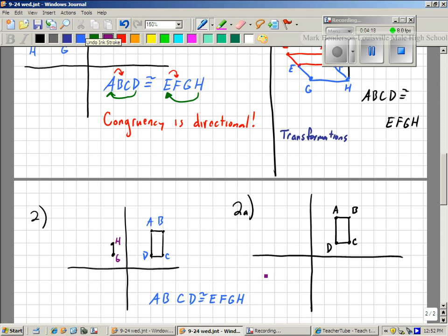So if you notice, same congruency statement as last time. ABCD is congruent to EFGH. So what we have here, we go from C to D the same way that we go from G to H. Do you agree with that?